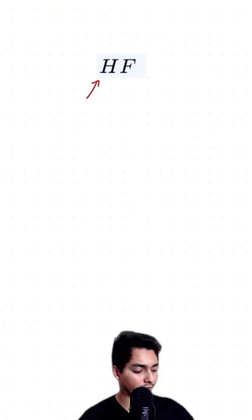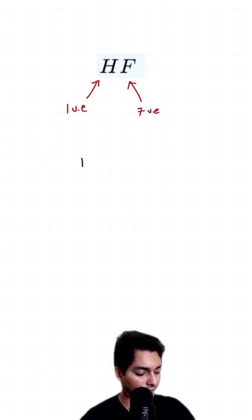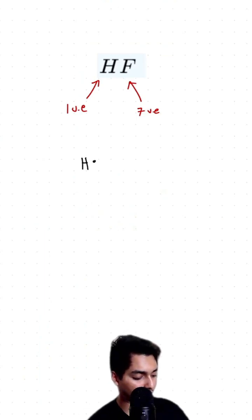Recall on the periodic table that H has one valence electron and F has seven valence electrons. So I'm going to just take my H right here and bond it to this with my one valence electron and then bond it to my F which has a total of one two three four five six seven valence electrons here.